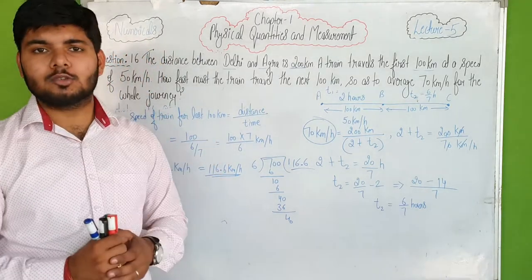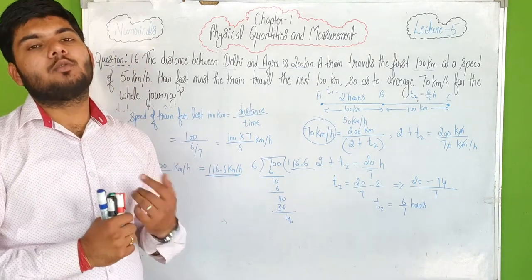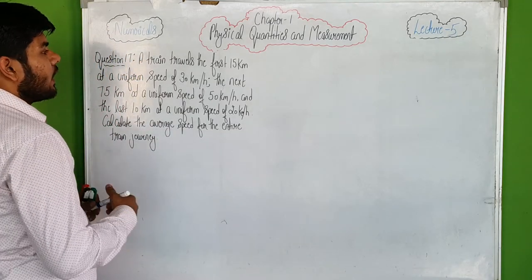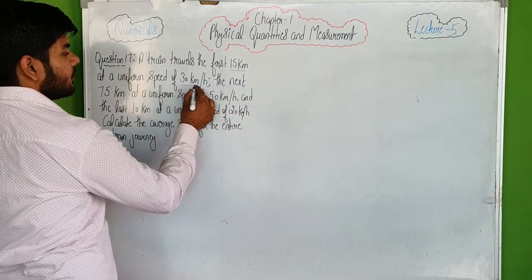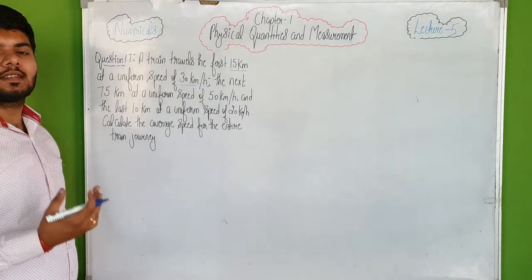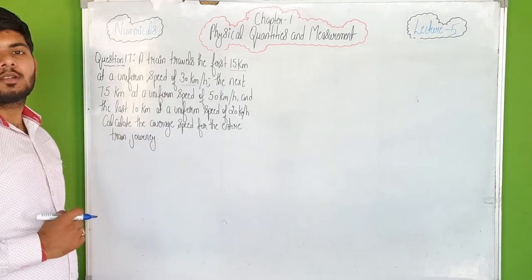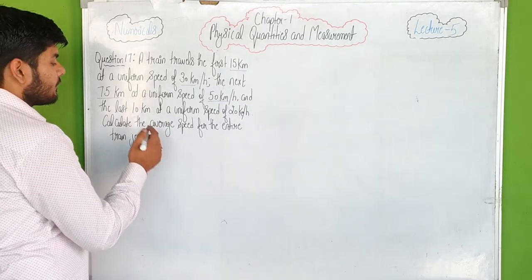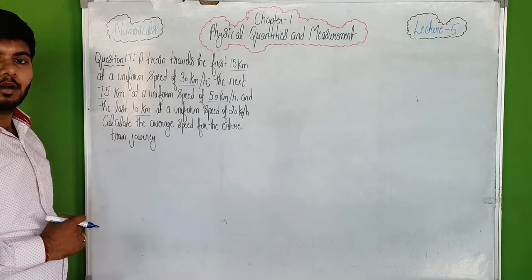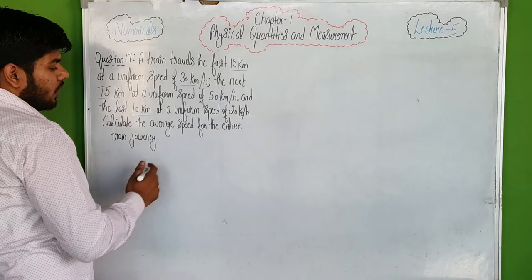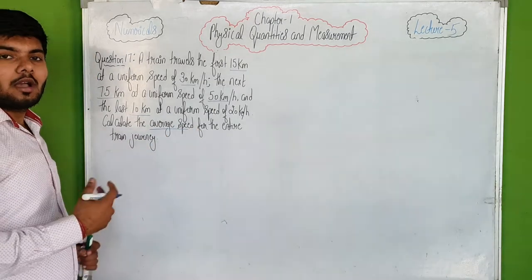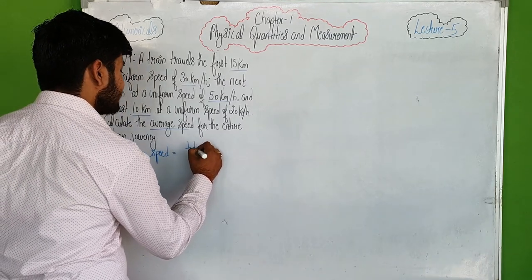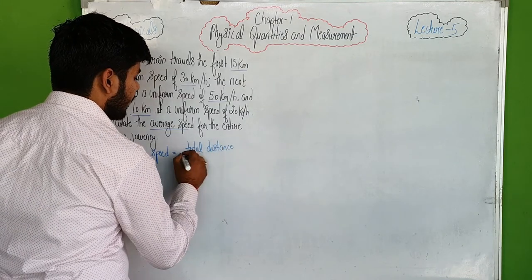Dear students, that's how you solve this type of numerical — several concepts were used here. Moving on to numerical number 17: a train travels the first 15 km at 30 km per hour, the next 75 km at 50 km per hour, and the last 10 km at 20 km per hour. Find the average speed. Average speed equals total distance upon total time.